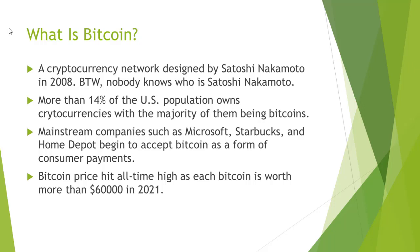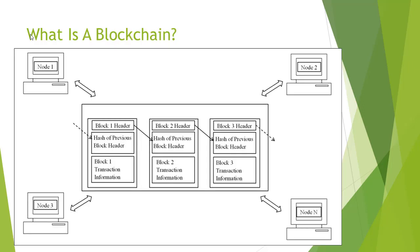Main Street companies such as Microsoft, Starbucks, and Home Depot began to accept Bitcoins as a form of customer payments. This is groundbreaking because you can basically use Bitcoin to buy merchandise and services. Many people are trading Bitcoins, and Bitcoin price hit an all-time high in terms of dollar values — it is worth more than $60,000 in 2021. Bitcoins are important, but what are they? Let's figure out.